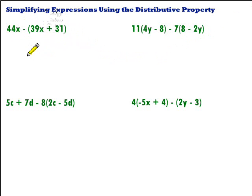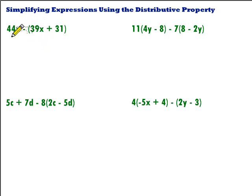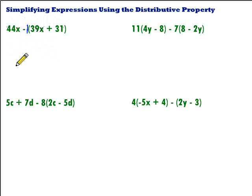Let's take a look at this first one. We have 44x minus the quantity 39x plus 31. We want to get rid of those parentheses, so we're going to distribute through the thing being multiplied by that quantity. In this case, we have a minus, which is really a negative 1, so we can fill that in. We're going to distribute that negative 1 by multiplying it by each term inside those parentheses.